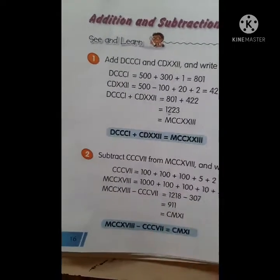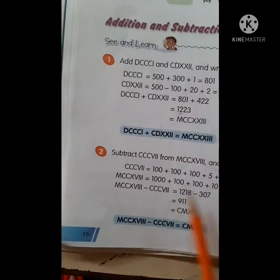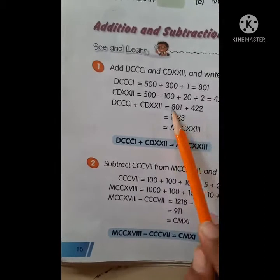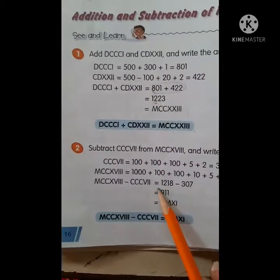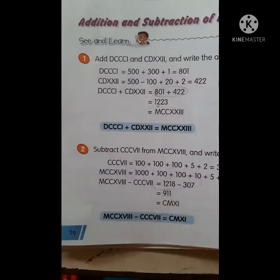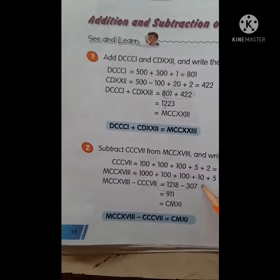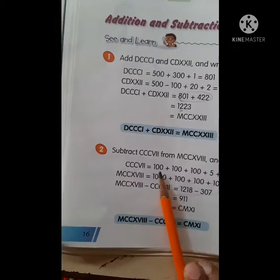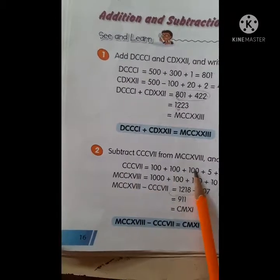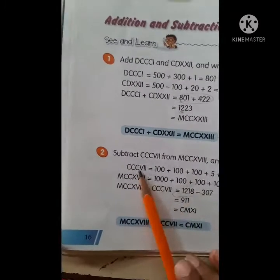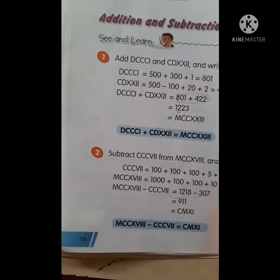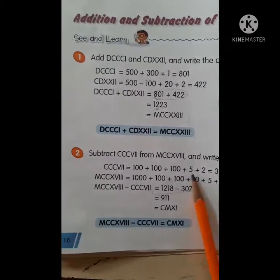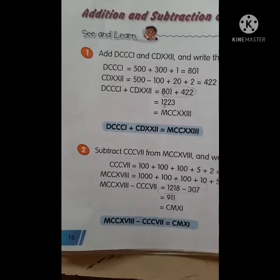Same way for subtraction. We again first convert both numerals to numbers. C stands for 100, so CCC means 300. V is 5 and II is 2. So 100 plus 100 plus 100 plus 5 plus 2 equals 307.